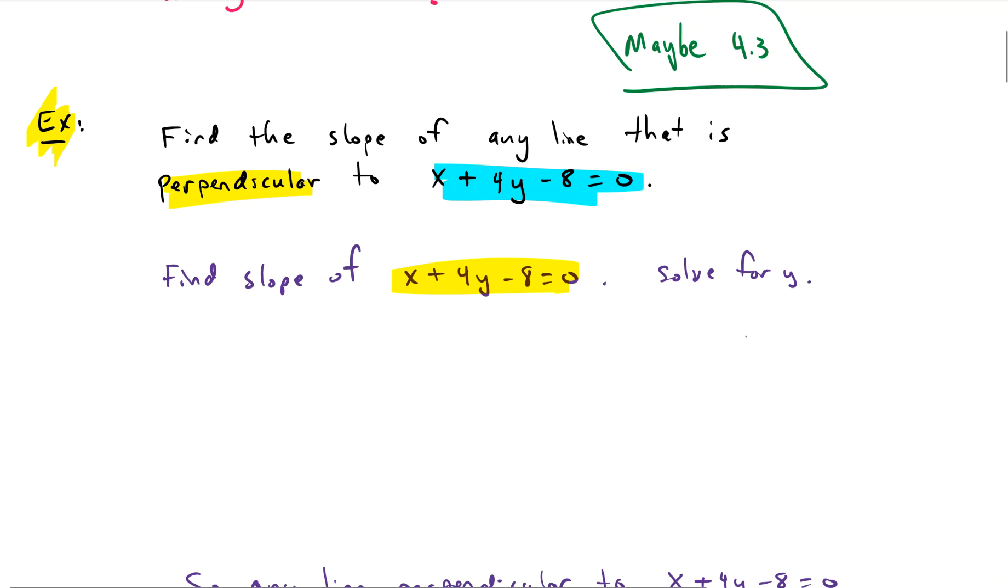So if we solve for y, we start out with x plus 4y minus 8 equals 0. Let's take the 8 over and we'll also take the x over.